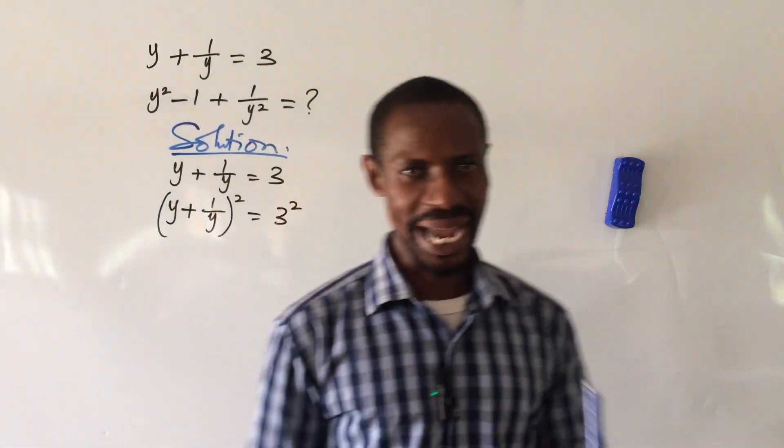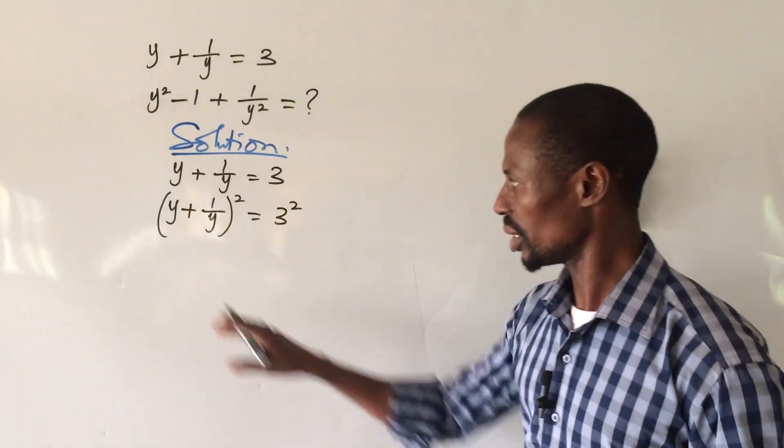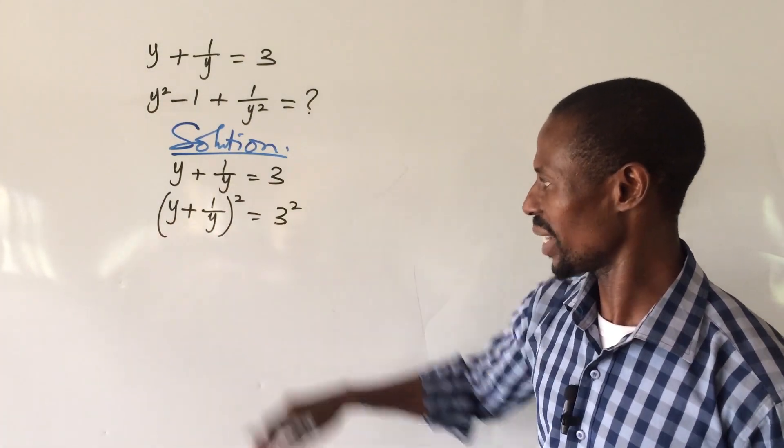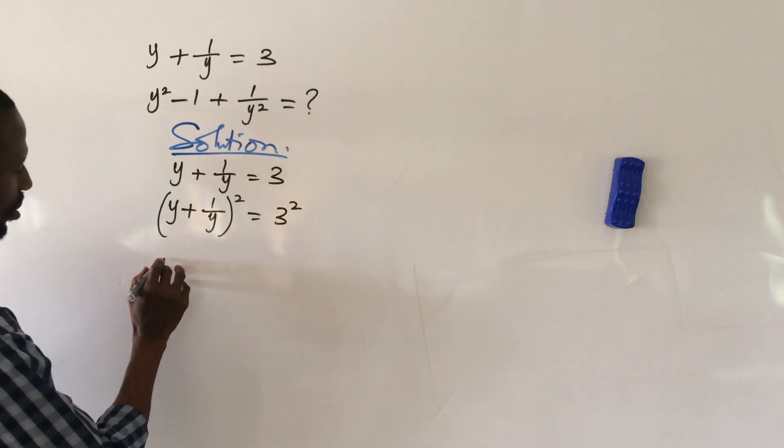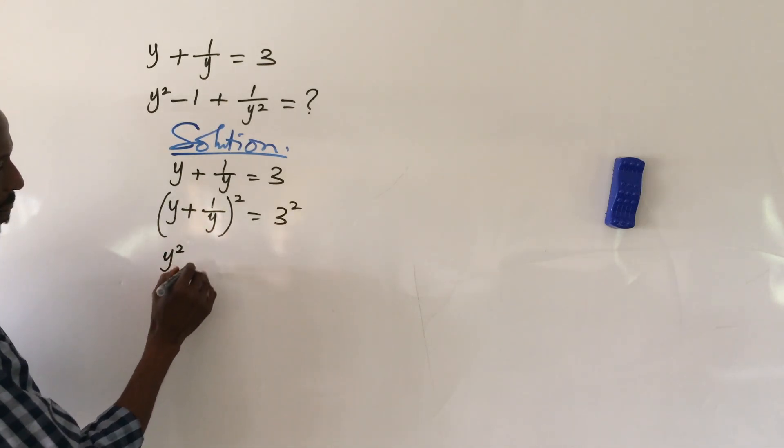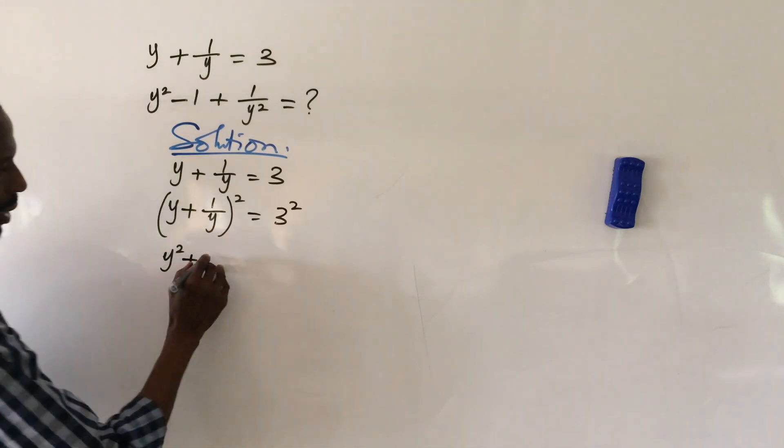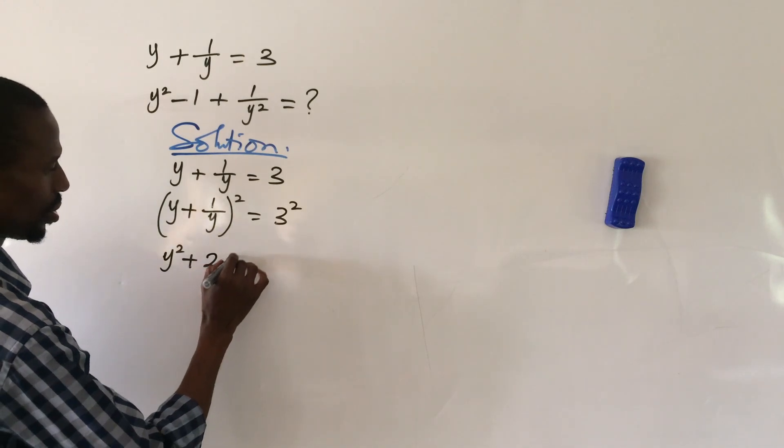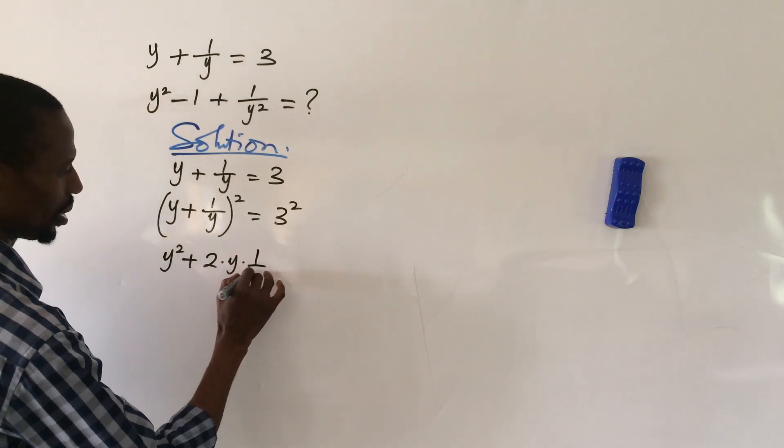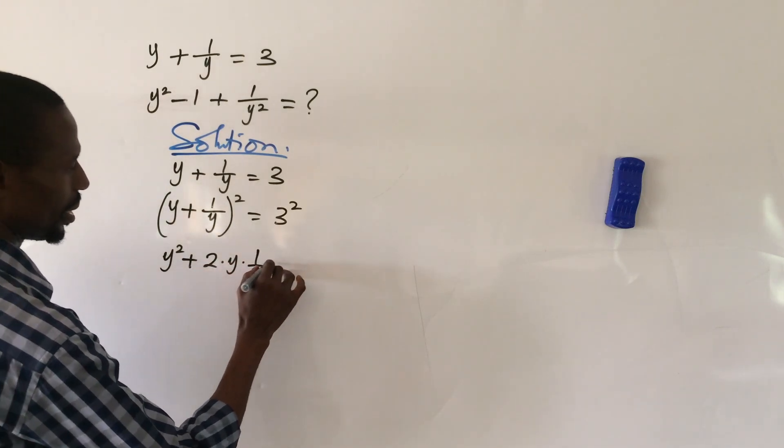Now I'm going to use the binomial expansion method to expand this. So if I go by using the binomial expansion, we're going to have this to be y squared plus 2·y·1/y plus (1/y) squared equals 9.